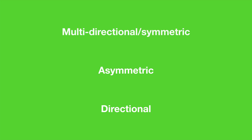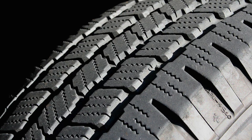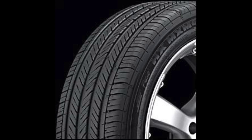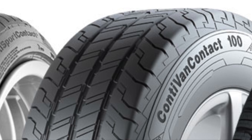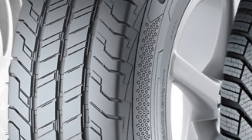Let's start with symmetric or multi-directional tyres. These tyres are commonly found on cheaper cars as they feature a simple tyre tread pattern. They are called symmetric tyres because the tyre pattern on the inside of the tyre is the same as on the outside of the tyre. The name multi-directional comes from the fact that these tyres can rotate in any direction and they can be placed on any side of the car.